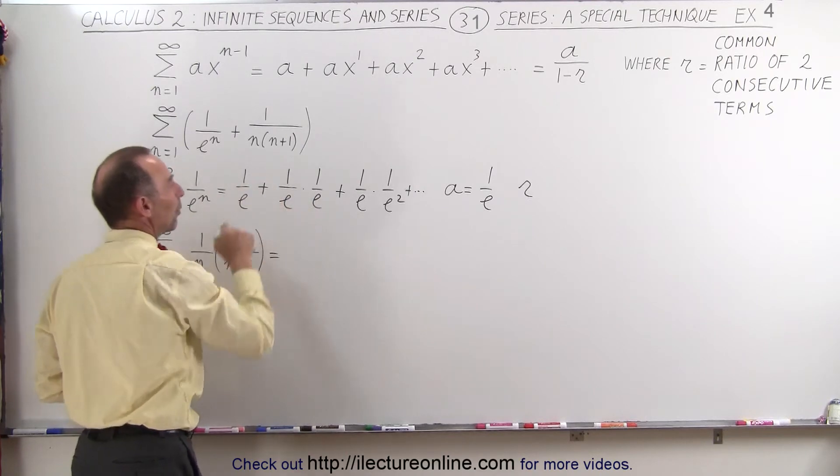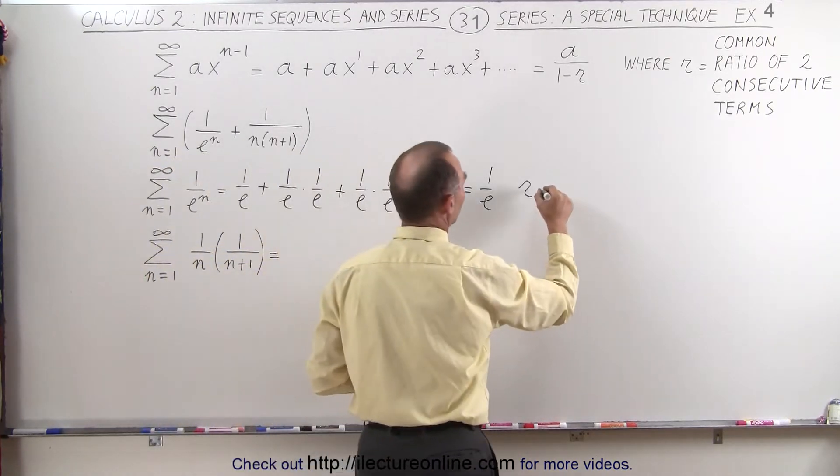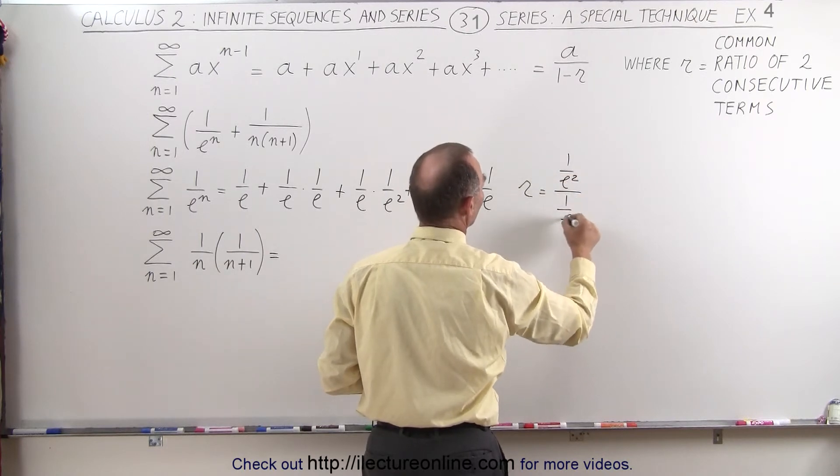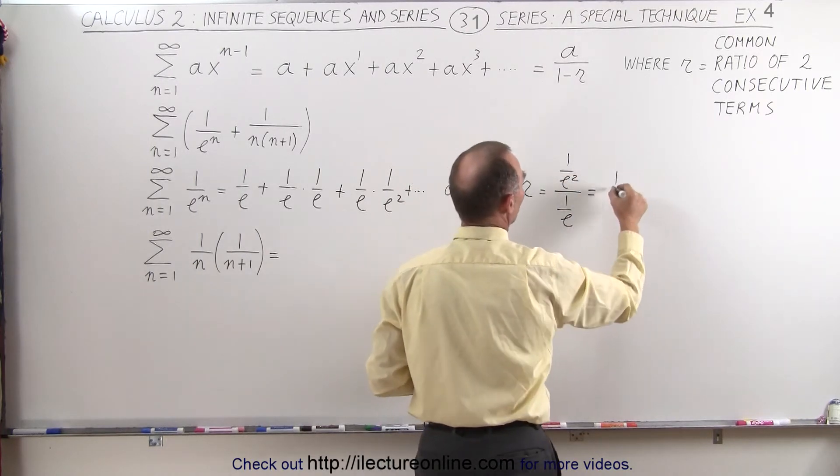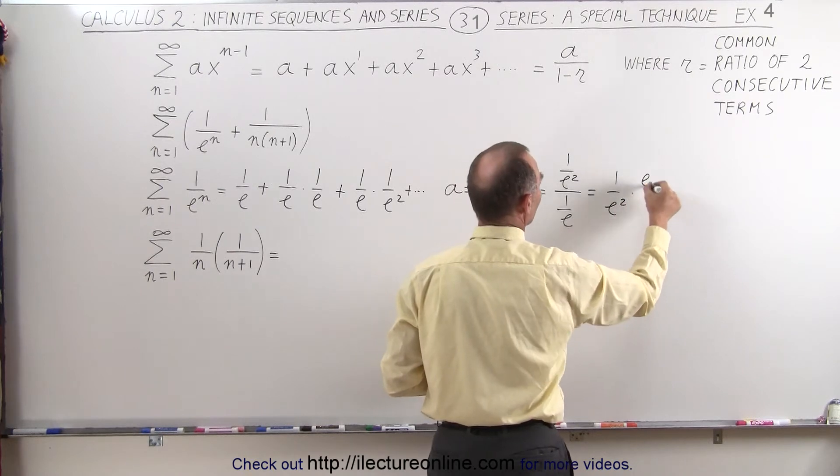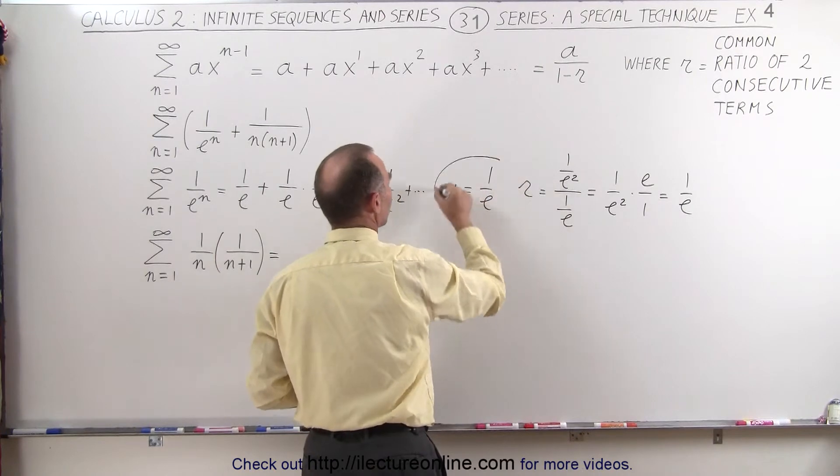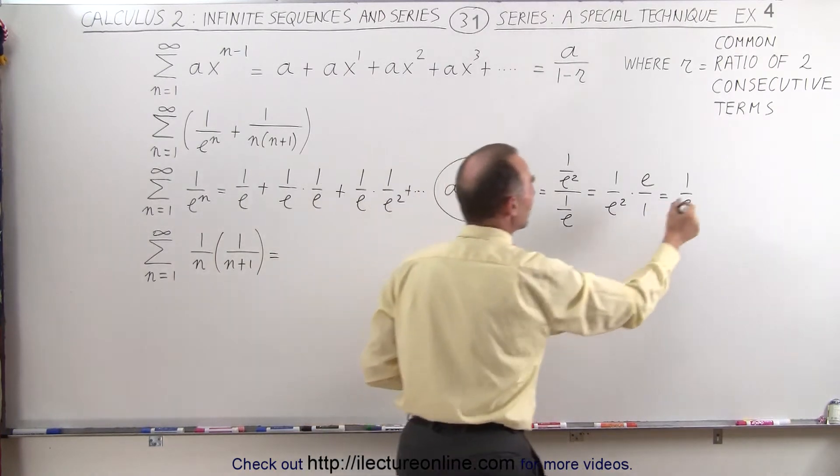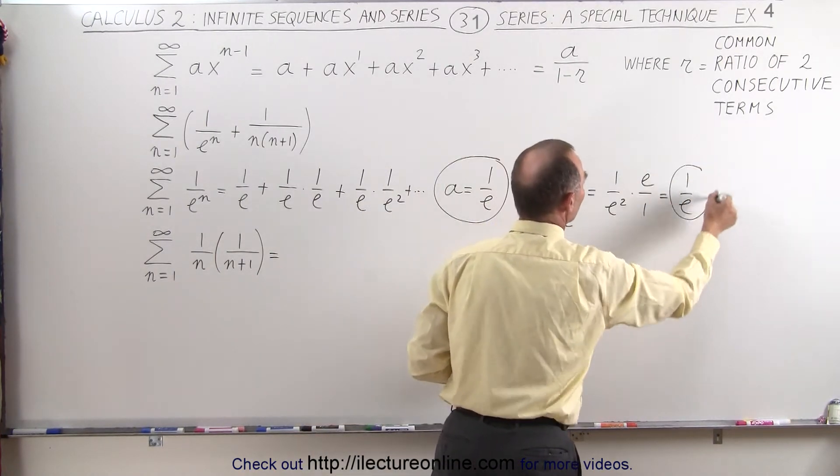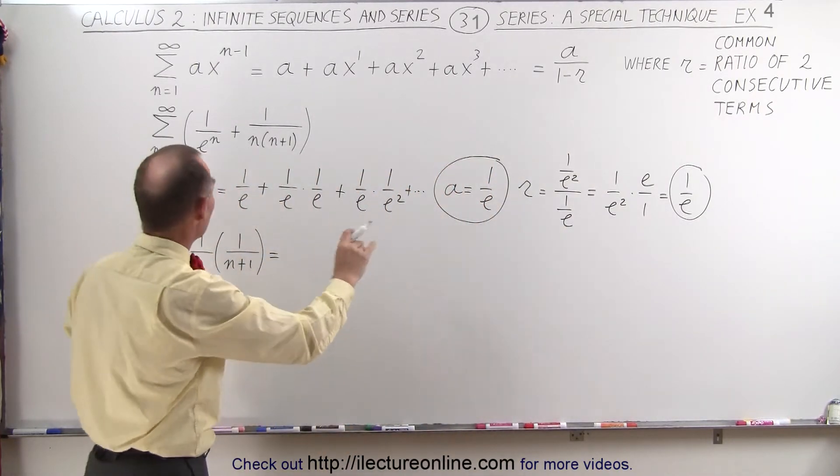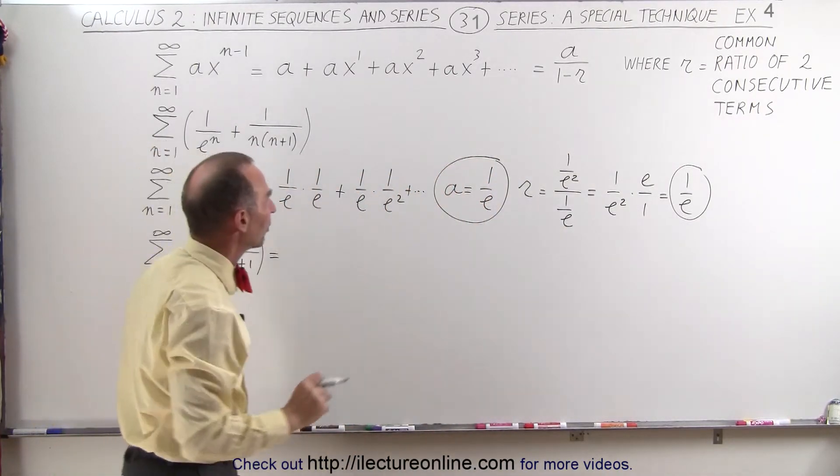So r will be equal to 1 over e squared divided by 1 over e, which equals 1 over e squared times e over 1, which equals 1 over e. So we have the first term as 1 over e and the common ratio as 1 over e. Now we're ready to find the sum of this first part.